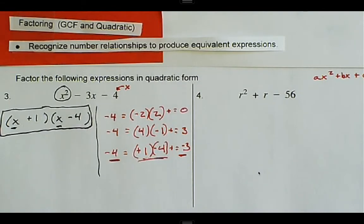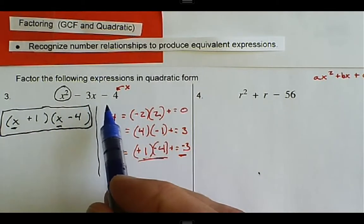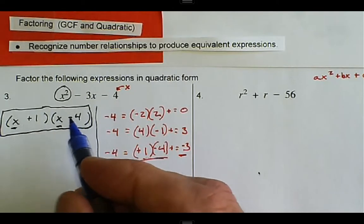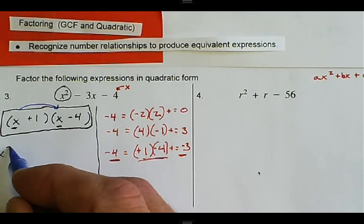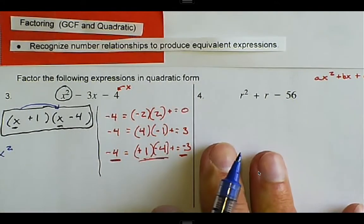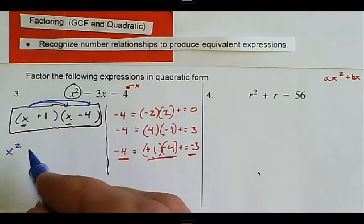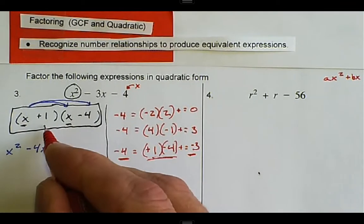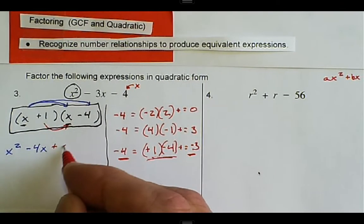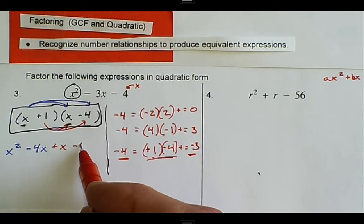To check that we did it correctly, we multiply the factored form back out. x times x is x squared; x times negative four is negative four x; one times x is x; and one times negative four is negative four.